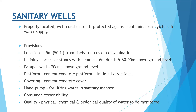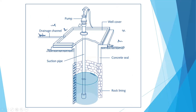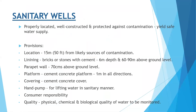Next is the parapet wall, which should be around 70 centimeters above the ground level. Next is the platform — a cement concrete platform extending one meter in all directions circumferentially. The covering should be a cement concrete cover to avoid contamination. A hand pump should be present for lifting water in a sanitary manner so there is no human contact or other source of contamination.